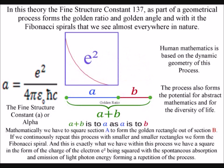Mathematically, we have to square section A to form the golden rectangle out of section B. If we continuously repeat this process with smaller and smaller rectangles, we form the Fibonacci spiral.